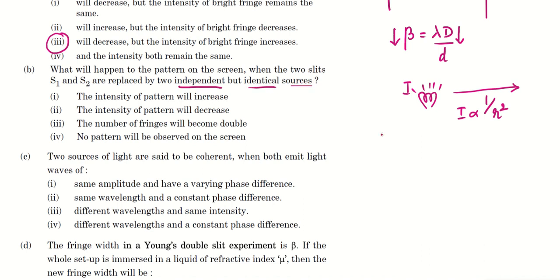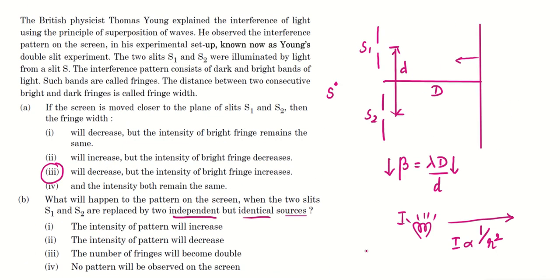If you are using two independent sources, for example, here in this slit, if you are using one bulb here and then another bulb here, independent sources means that only like two different sources.